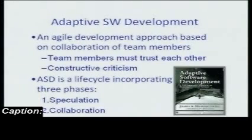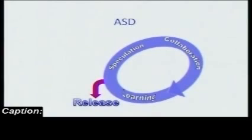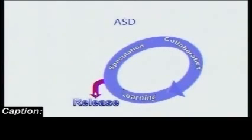Adaptive Software Development is defined in the book by James Highsmith III. It was intended to build complex systems. The loop shown here will appear with different phases in the next few methodologies. In ASD, we have speculation, collaboration, learning, and then the release.